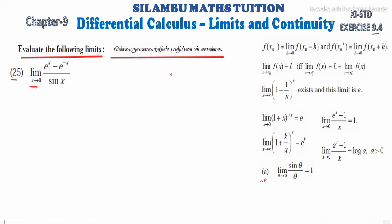If we approach 0, it is e power 0 minus e power 0 divided by sin 0. Anything divided by 0, we get 1 minus 1 divided by sin 0 is 0. Finally, 0 divided by 0. We get an indeterminate form, that's why we will redefine this function.